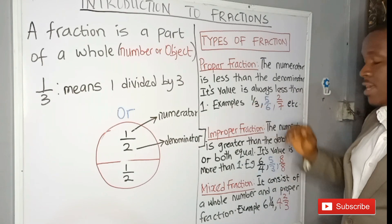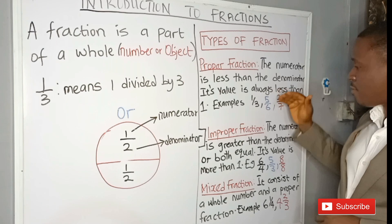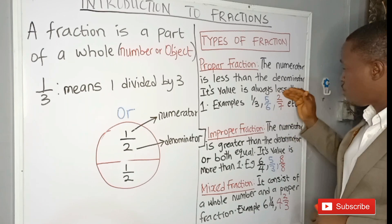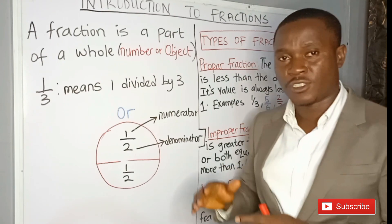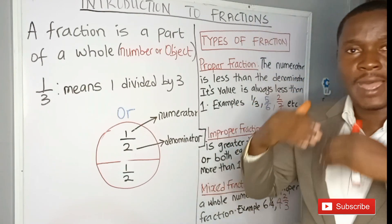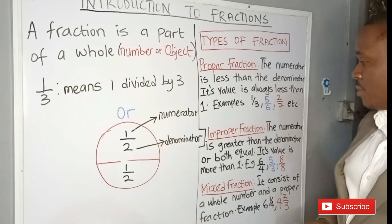So a proper fraction has the number on top smaller than the number at the bottom. We have 1 over 3 as an example of a proper fraction. We also have 5 over 6, 2 over 7. All these values are proper fractions because the numerator is smaller than the denominator.